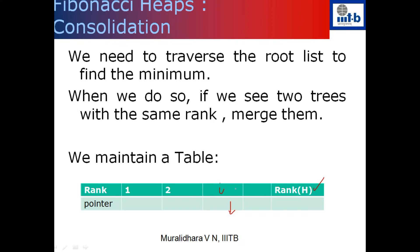The algorithm is simple: scan through from left to right. When you come across a node, check in the table if there is a tree with the same rank. If there is, delete it from the table, take the pointer and merge them. You now have a new tree - go check the table again whether there is another tree with the same rank. Keep merging. The moment you come across a rank for which no tree exists, store the pointer in the table at that rank entry.